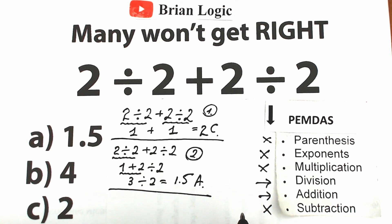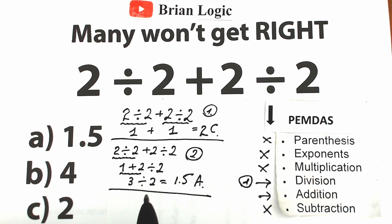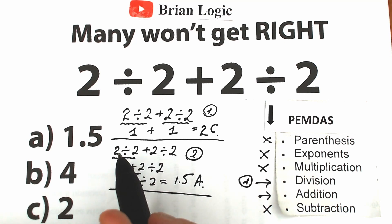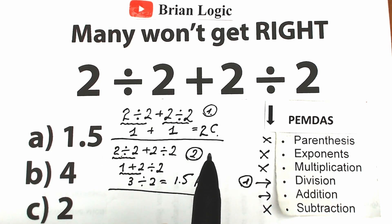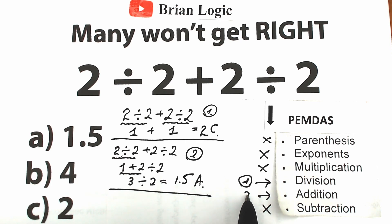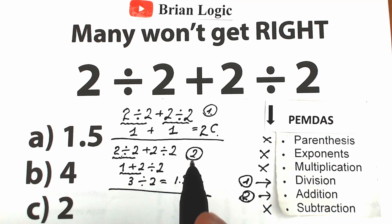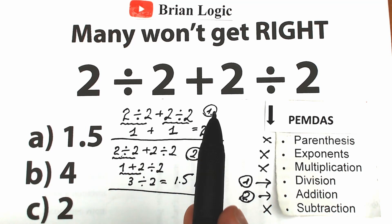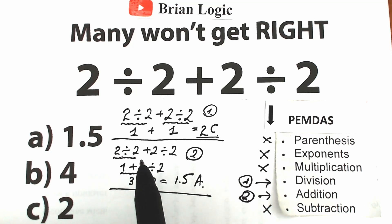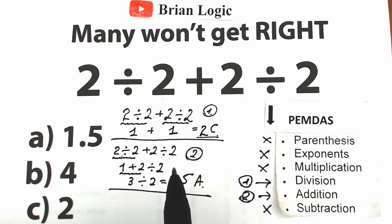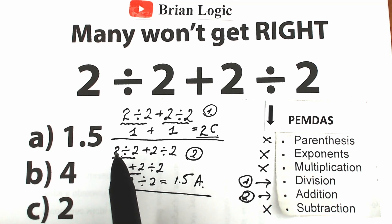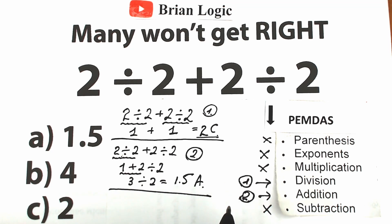Division has the higher position than addition, so the first step is division. Both interpretations start with division — that part is the same. But the key difference is what happens next. In the second approach, after the first division, addition is done before the second division. That is incorrect, because addition must always come after all divisions are completed.